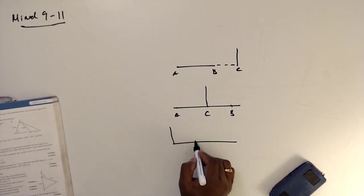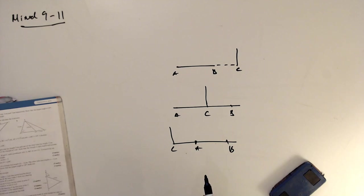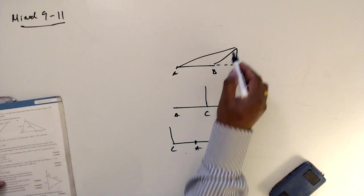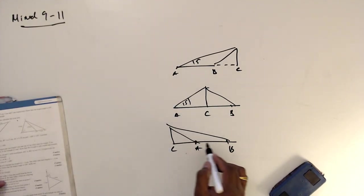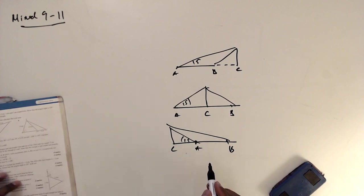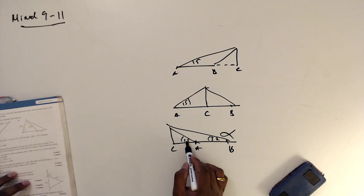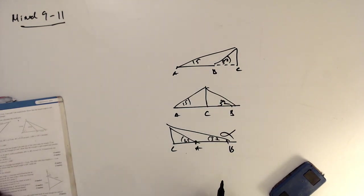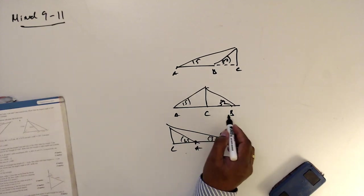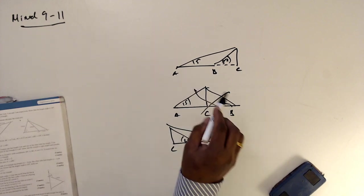Looking at the configuration: A and B are on the same side, and the angle of elevation from A is 15 degrees, from B is 32 degrees. Since 32 is larger than 15, B must be closer to the tower. The option where A and B are both on the same side of C is the only valid configuration.